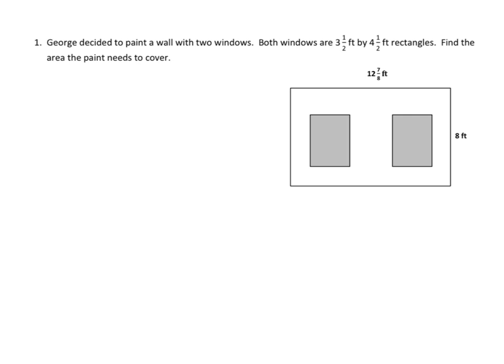Let's start with this one. George decided to paint a wall with two windows. Both windows are 3 1⁄2 feet by 4 1⁄2 foot rectangles. Find the area the paint needs to cover. Well, he has to cover this whole wall, but he doesn't have to paint the windows. So, we need to find out what the total area is of this rectangle, and we need to subtract the area of the two windows.